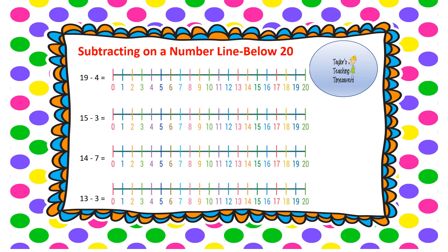Now subtracting on a number line with numbers below 20 — our numbers are getting a little bigger. First: 19 take away 4. Find 19 and count back 4 spaces: 1, 2, 3, 4. We've landed on 15, so 19 take away 4 equals 15. Next question: 15 take away 3. Find 15, jump back 3 spaces: 1, 2, 3. We've landed on 12, so 15 take away 3 equals 12.